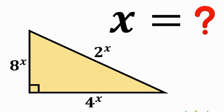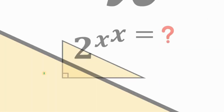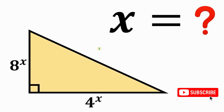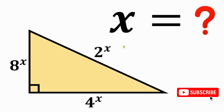Is it possible to find the value of x given this condition? Given this right triangle with side lengths 8 raised to the power of x, 4 raised to the power of x, and the hypotenuse 2 raised to the power of x, the goal is to find the value of x that satisfies this condition.